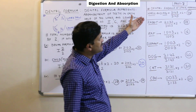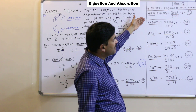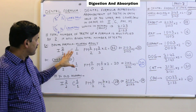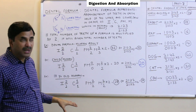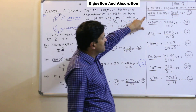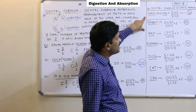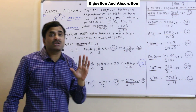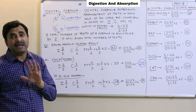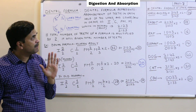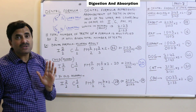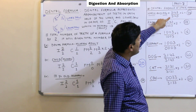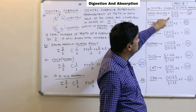These are the dental formulas of other mammals, which may help you sometime, but focus on the three human formulas. Horse and pig have the highest number of teeth among all mammals — 44 teeth. Their dental formula is 3, 1, 4, 3 upon 3, 1, 4, 3 into 2 equals 44.